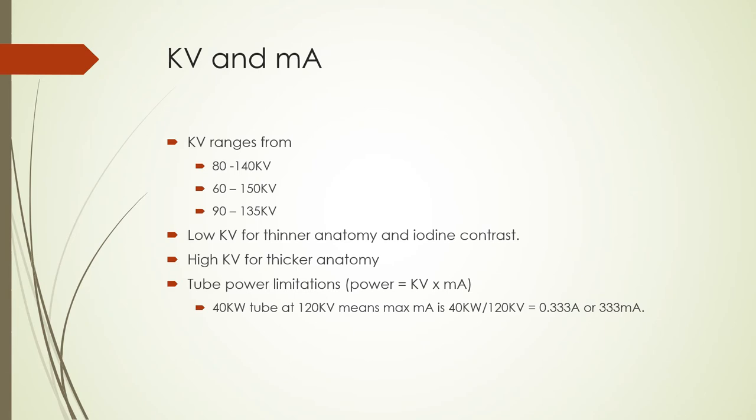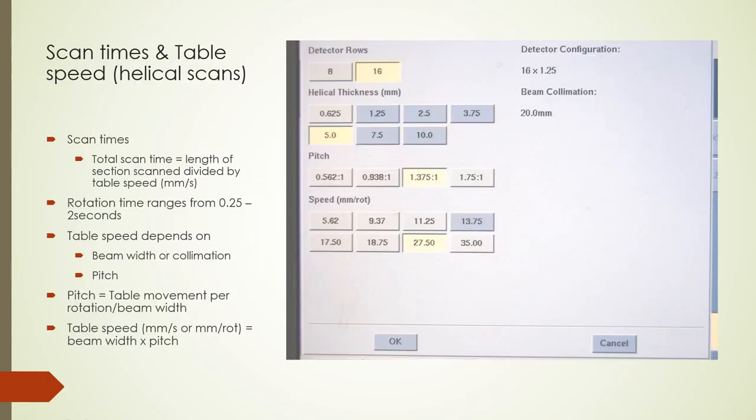For example, with a 40 kW tube at 120 kV, the maximum mA is 40 kW divided by 120 kV, giving 333 mA. The minimum rotation angle needed to form a CT image is 180 degrees plus the fan angle — about 240 degrees for a 60-degree fan angle. For helical scans, scan times depend on rotation time, beam width, extent of the scan, and pitch factor. Pitch is table movement per rotation divided by beam width.